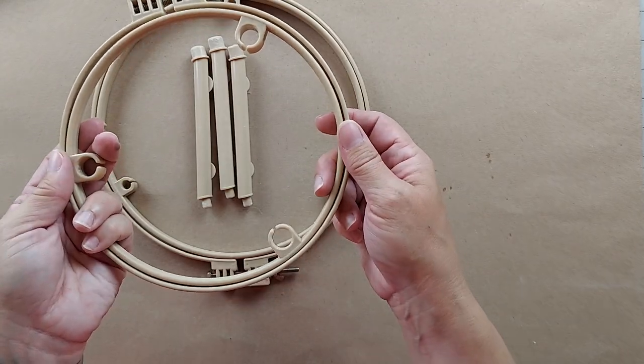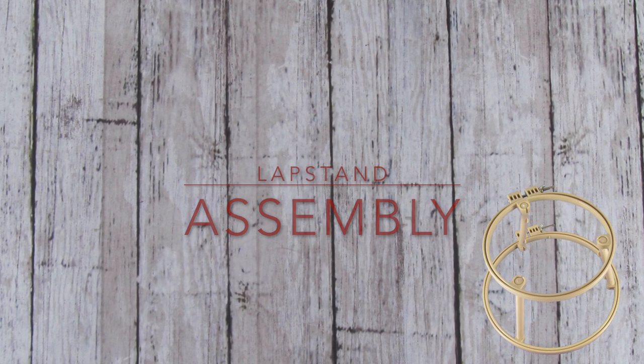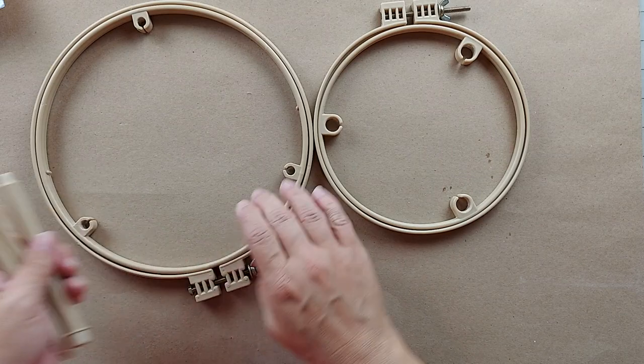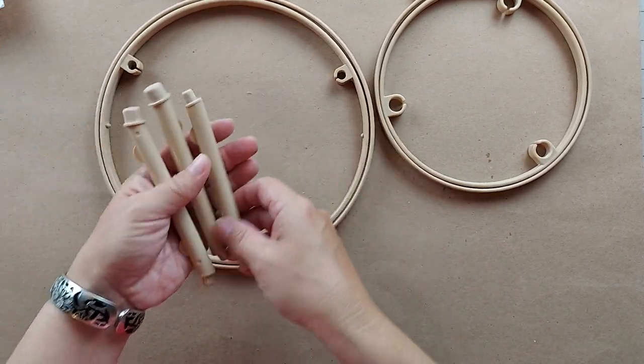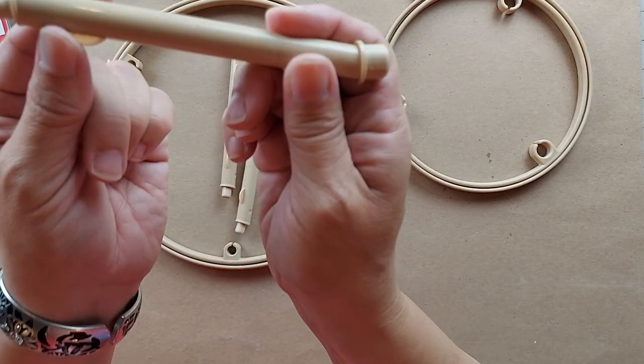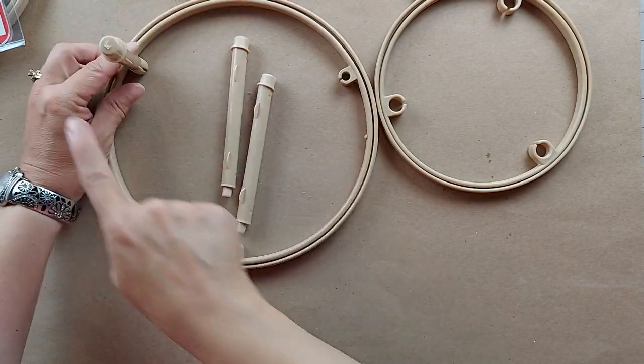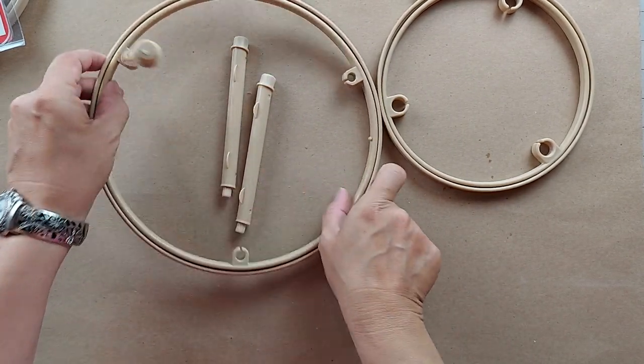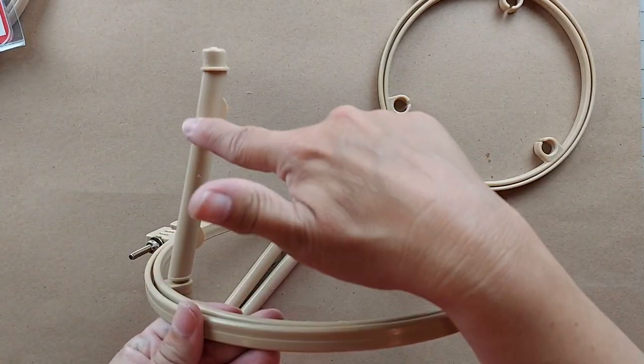So to assemble the hoop, you want to start with the larger of the two hoops, and you want to take these and push this smaller of the two ends into these holes. You want to do it so that the rod angles in towards the center of the hoop.